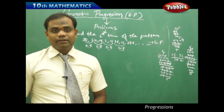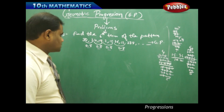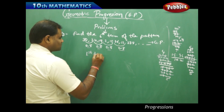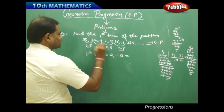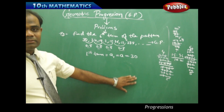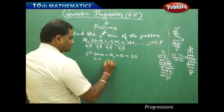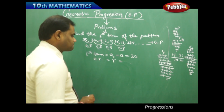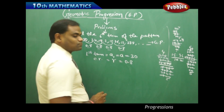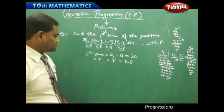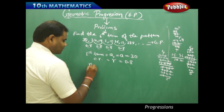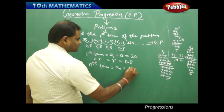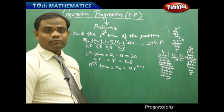Now comes the question: what is the 6th term of the pattern? To start with, my first term is clearly denoted by a₁, that is a, and it is given to be 30. My common ratio is r, and that is the value which I obtain when I divide a term by its previous term. Therefore the common ratio here is 0.8. Now I know the first term, I know the common ratio, and the nth term formula is: aₙ = a · r^(n−1).